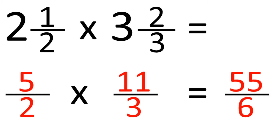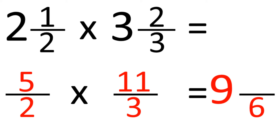And we can simplify this back into a mixed numeral. How many times does 6 go into 55? Well, 9 times 6 is 54, so it's 9, and we have 1 sixth left over. So the answer is 9 and a sixth.